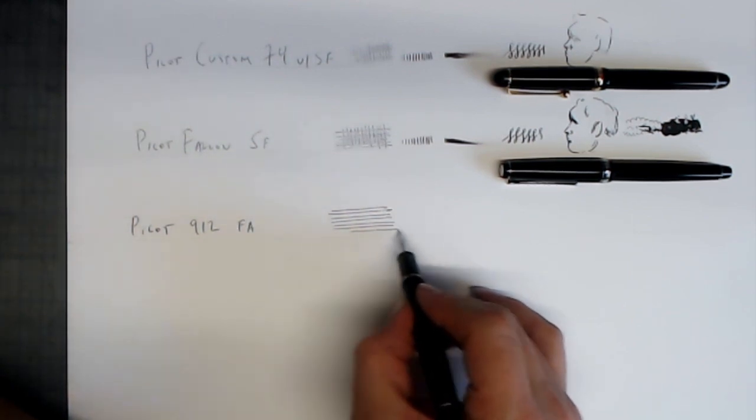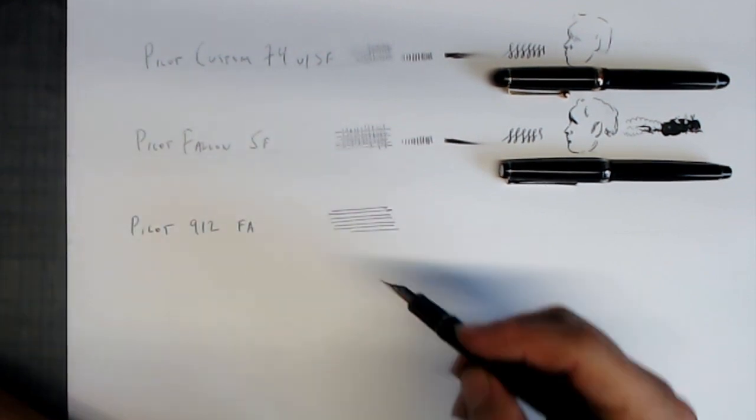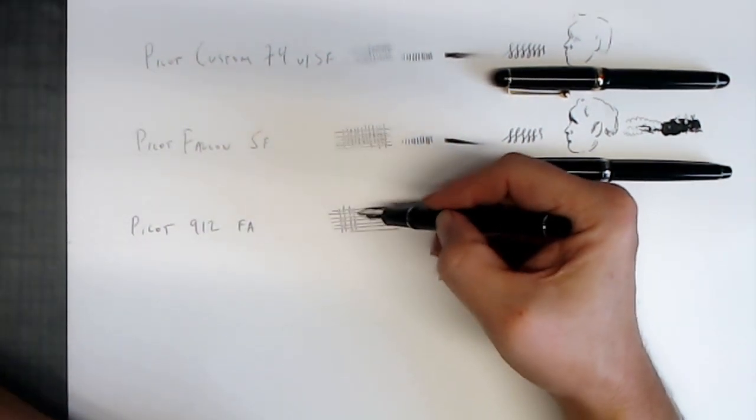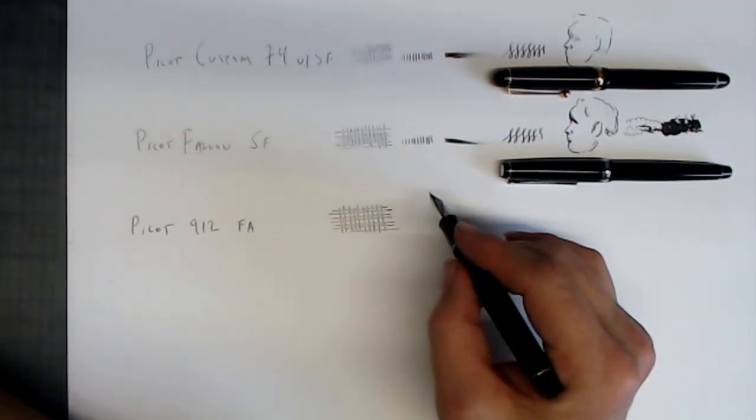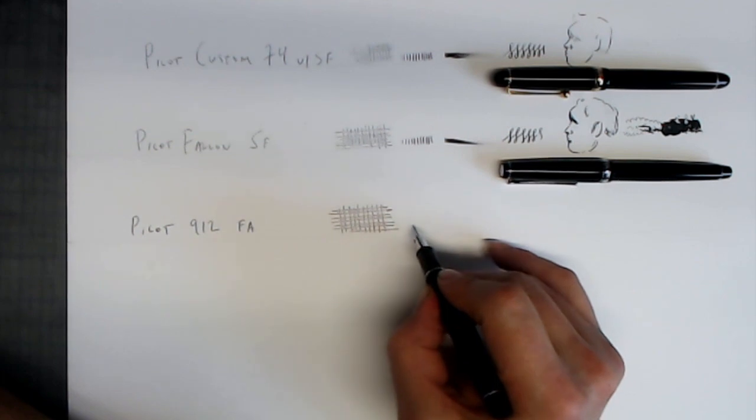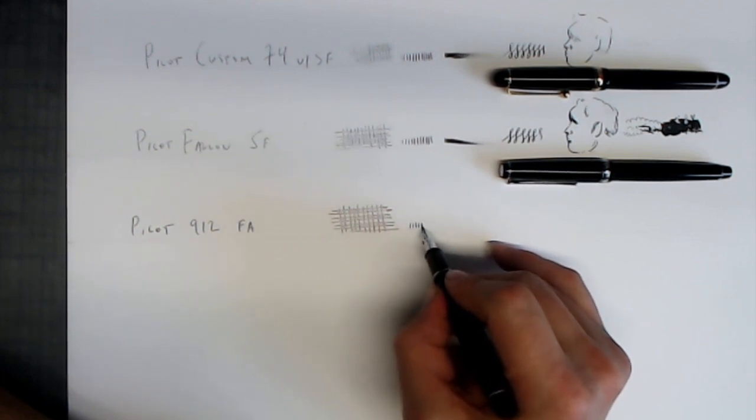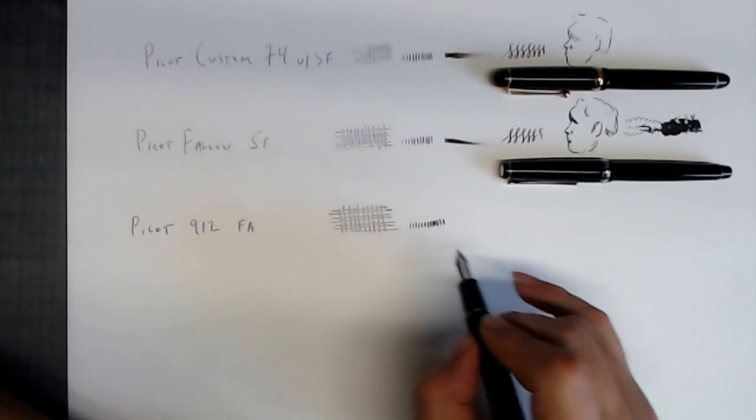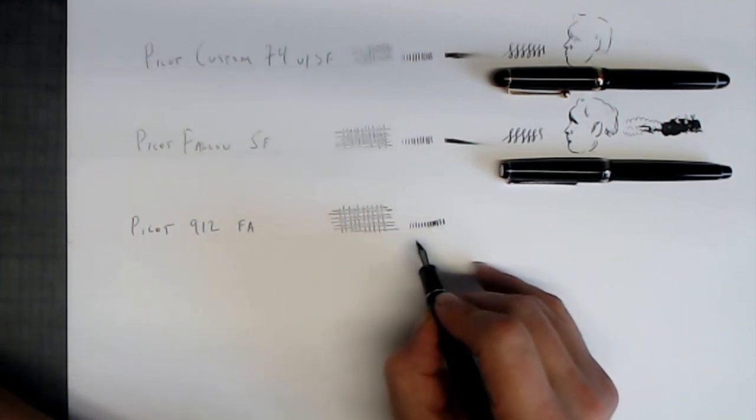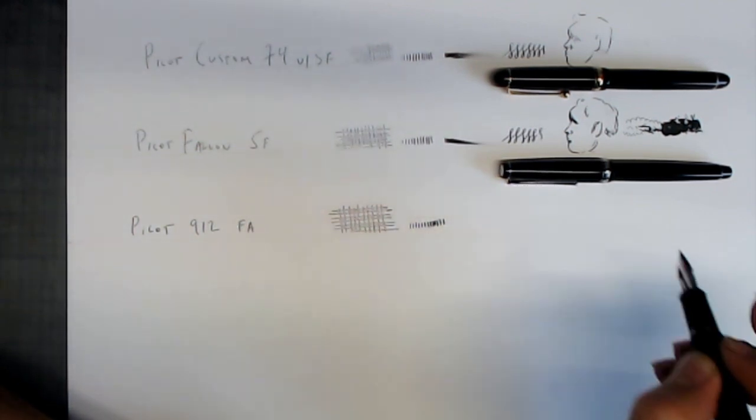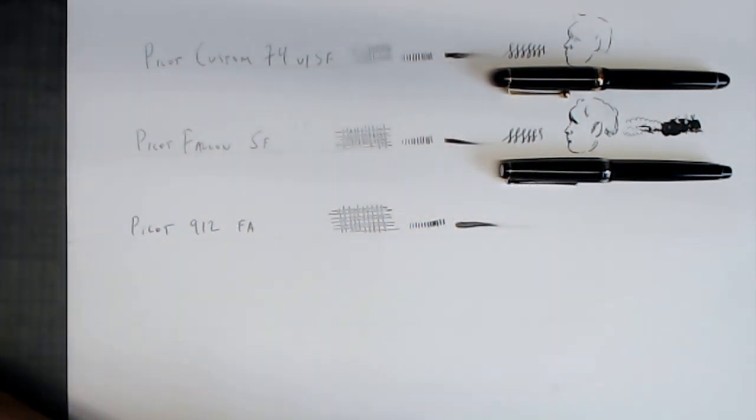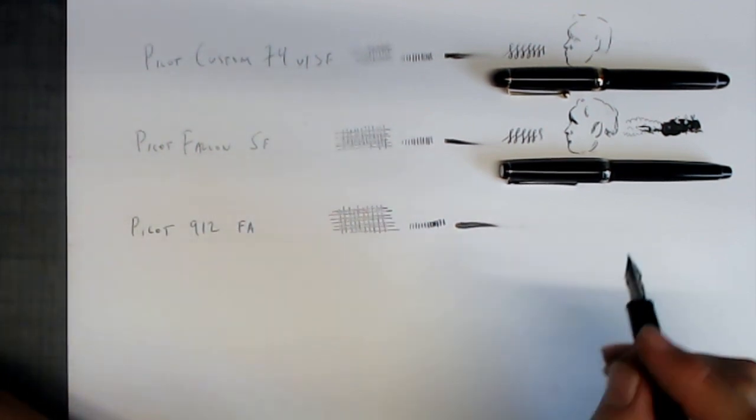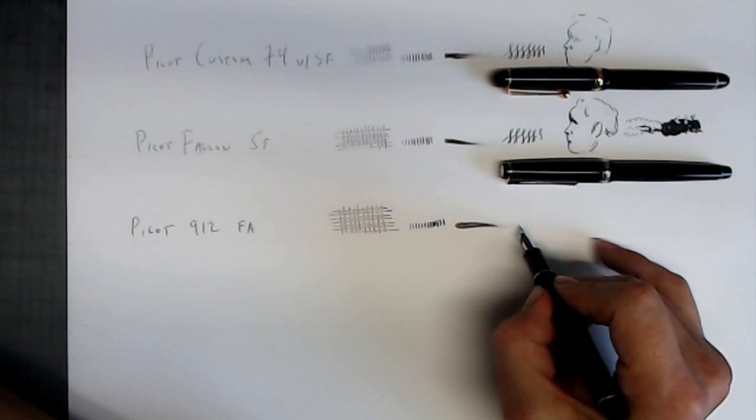Alright, so let's run it through its paces a little bit. First thing, notice that it puts down a much heavier line. So this might be the equivalent to almost a medium. Let's put it through its flex paces. So you can see that here, this is a true flex pen, right? We're starting to get real line variation here. Wetness test. This is much wetter than the other two pens, and probably the wettest one of all the pens I have.